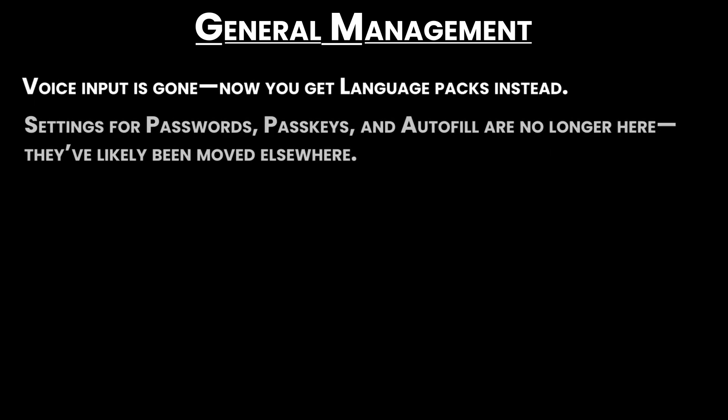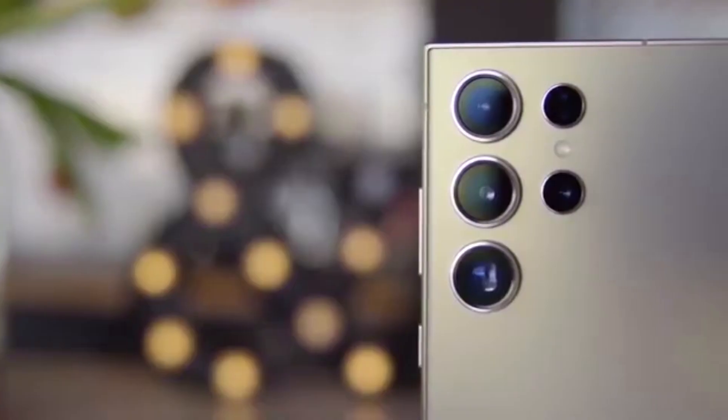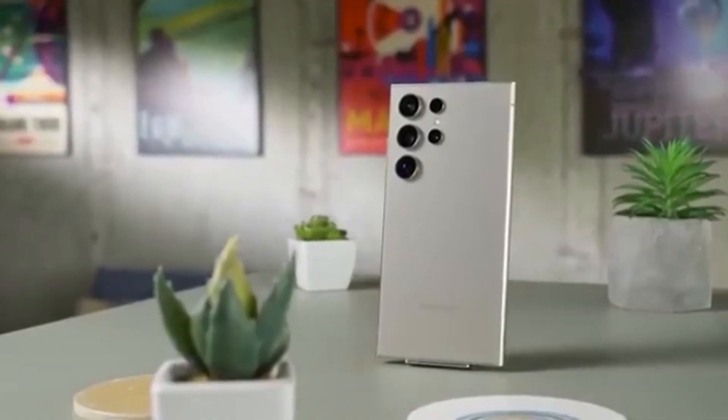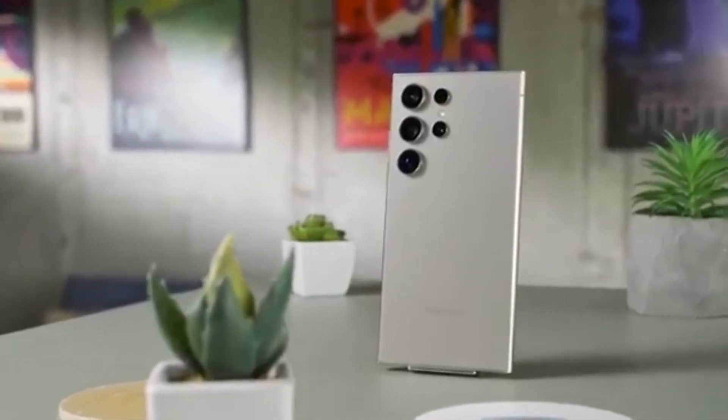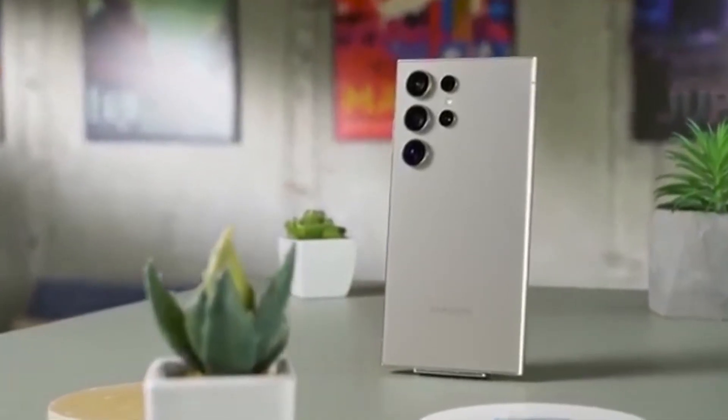General management: Voice input is gone — now you get language packs instead. Settings for passwords, passkeys, and autofill are no longer here; they've likely been moved elsewhere. That's a full list of what's been removed, renamed, or shifted around in Samsung's One UI 7.0 update.